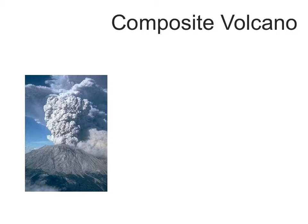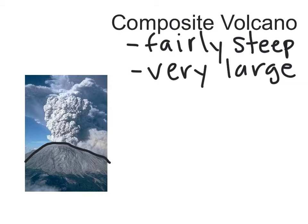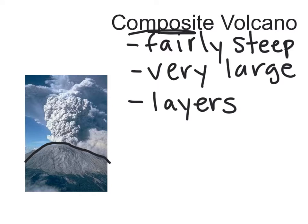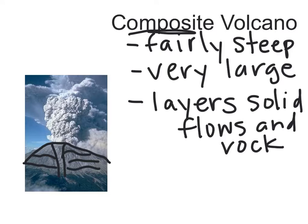The third type is called a composite volcano. If you look at the shape of a composite volcano, it is fairly steep, and composite volcanoes are very, very large — they're very big volcanoes. The reason they're called composite is because they're composed of different things — they're made of layers. They're made of layers of solid lava flows and rock, so if you looked inside this volcano it would have the tube that takes the lava out, with all this hardened rock and lava inside in layers.